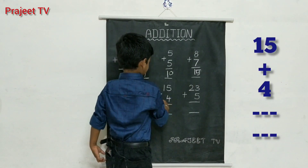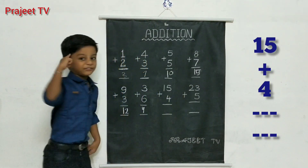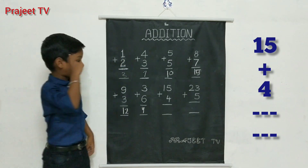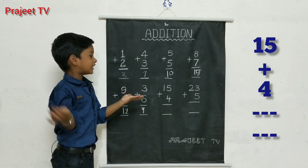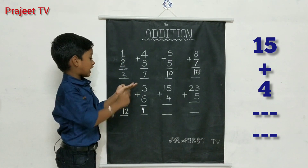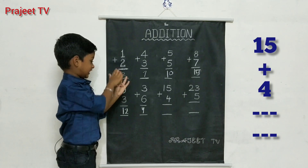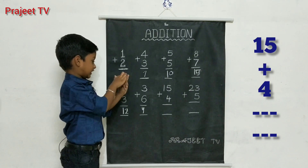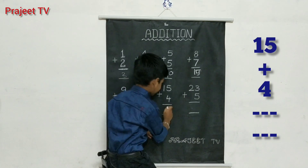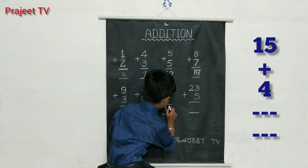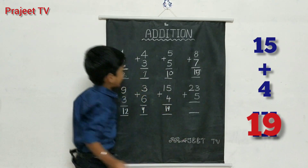Fifteen plus four. Fifteen in the mind, four in the fingers. Fifteen after sixteen, seventeen, eighteen, nineteen. Answer: nineteen.